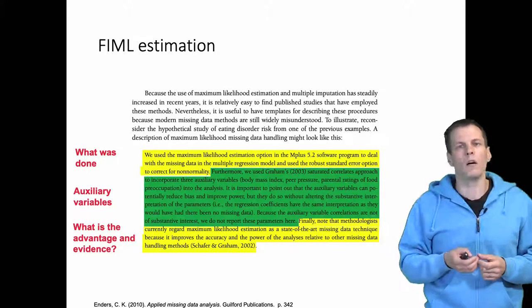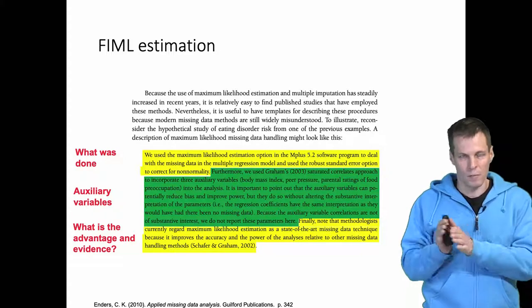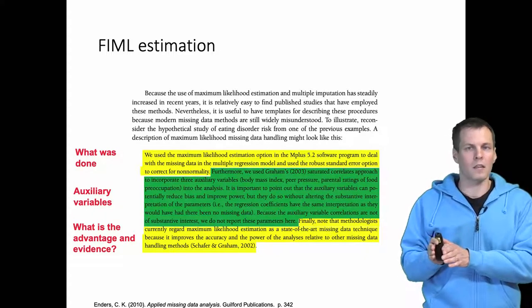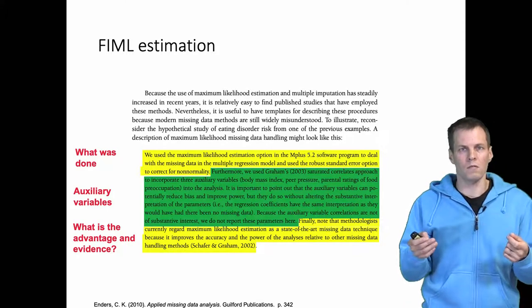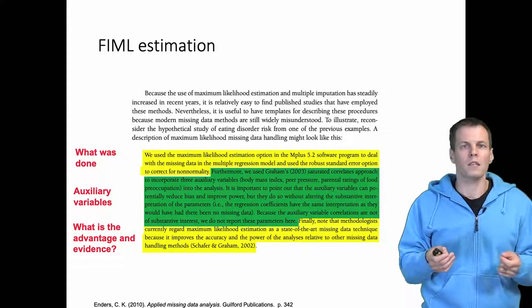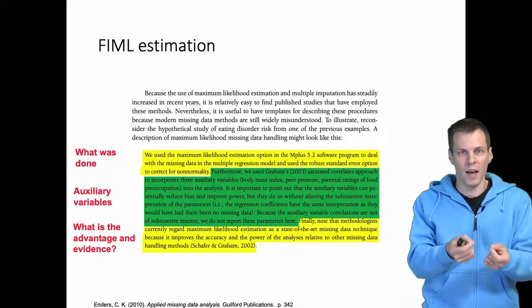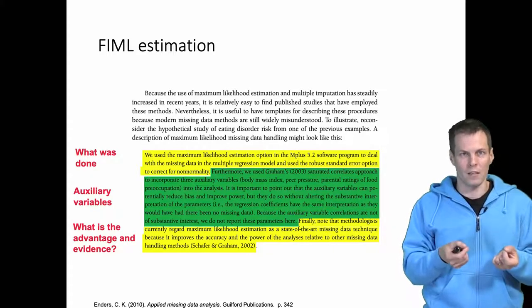So quite often when people justify their decisions, they cite previous empirical research saying that it is common to do thing X in the field Y. But that something is common is not really a reason for doing so. Instead you should explain what are the advantages and what is the evidence to support that that advantage is actually real.